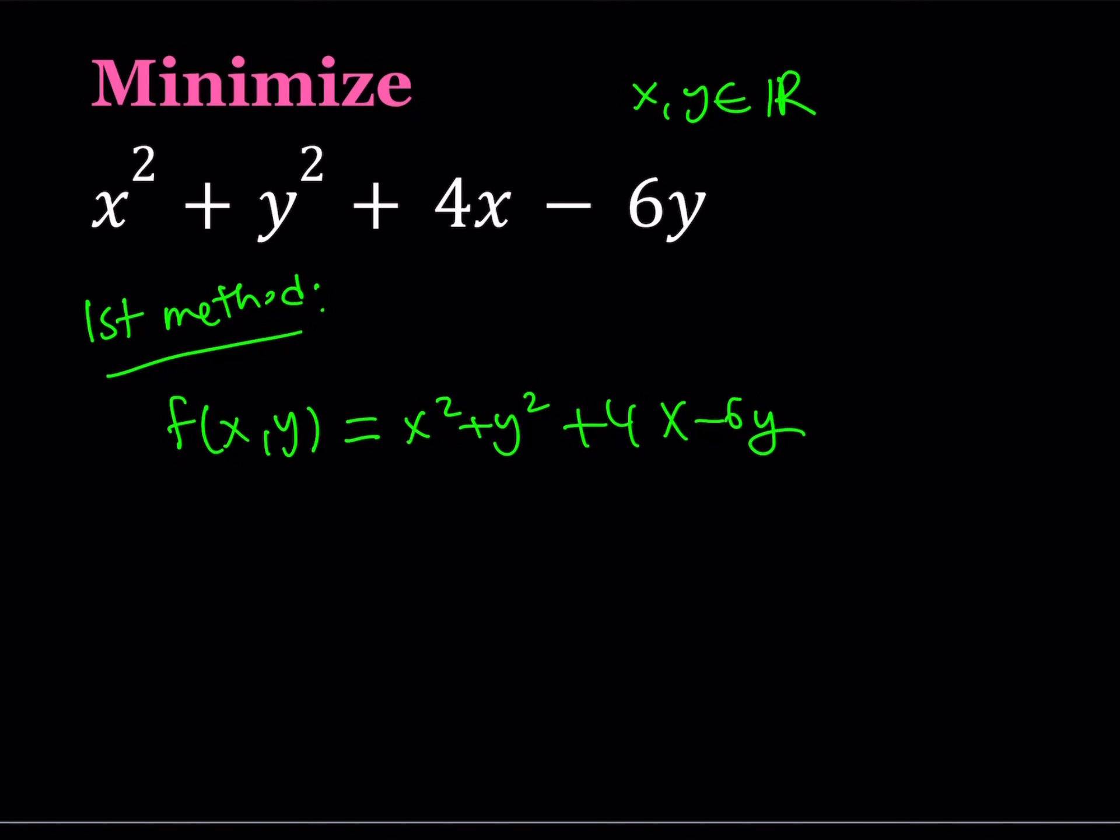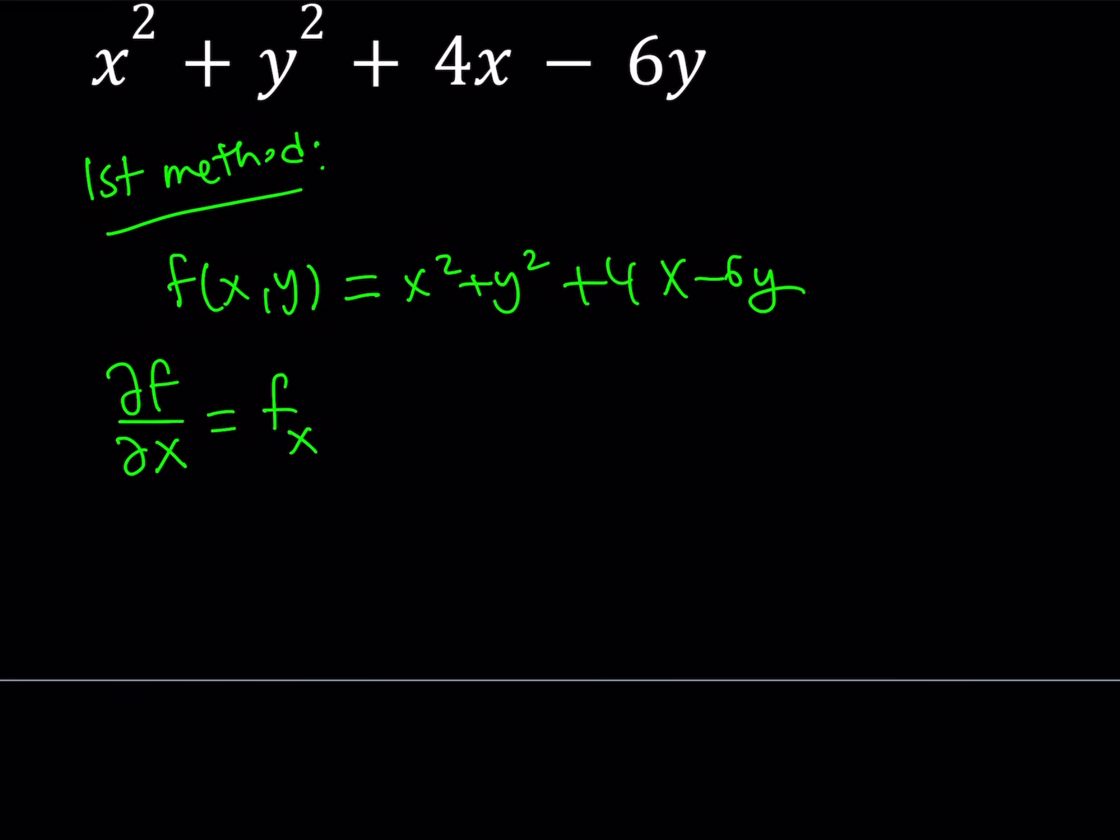And I'm trying to minimize f. To minimize f I'm going to be looking at two things. First of all the partial derivative of f with respect to x. That's the notation but we can also write it as f sub x. f sub x is basically taking the partial derivative with respect to x considering y as a constant. So the derivative of x squared is 2x, the derivative of y squared is 0, the derivative of 4x is 4, and the derivative of minus 6y is also 0.